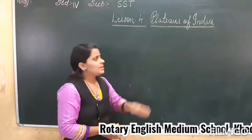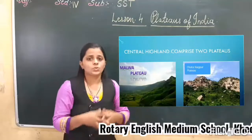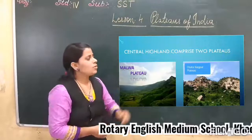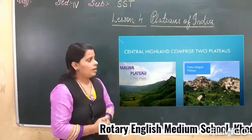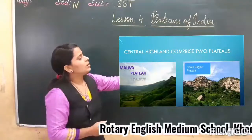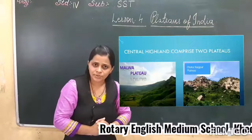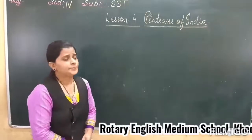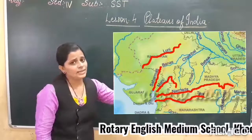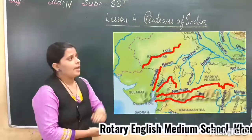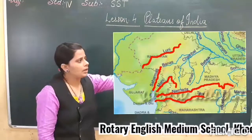This Central Highland comprises 2 plateaus. Which are the 2 plateaus? First is Malwa Plateau, which is in the north west, and another is Chhota Nagpur Plateau, which is in the east. The rivers Chambal, Betwa, and Son originate in the Central Highland and they flow northward, joining the Ganga and Yamuna.